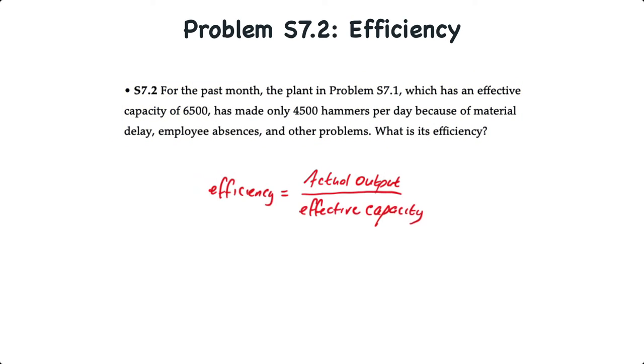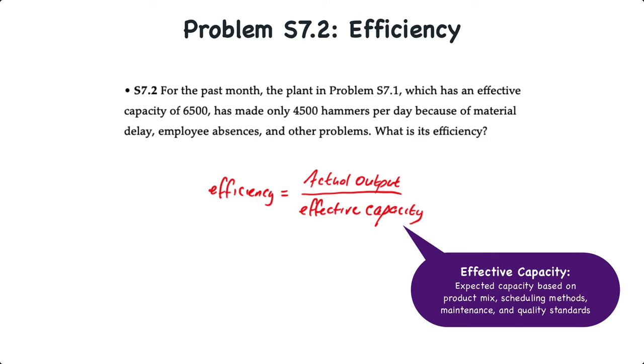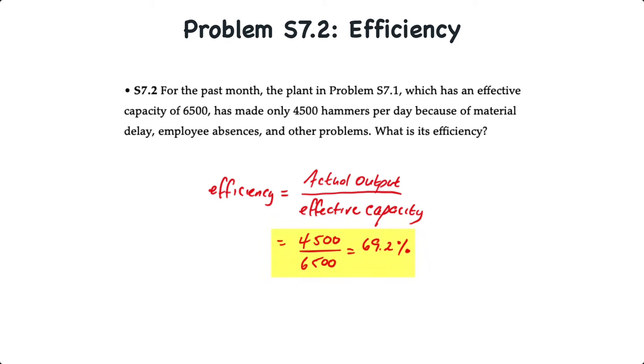Efficiency is equal to actual output over effective capacity. And effective capacity is the capacity that a firm can expect to achieve given its product mix, methods of scheduling, maintenance, and standards of quality. The effective capacity of a facility is always less than the design capacity. So if the actual output is 4,500 hammers per day and the effective capacity is 6,500, therefore the efficiency is 69.2%.